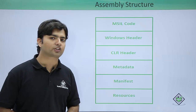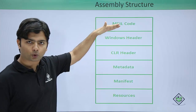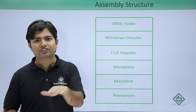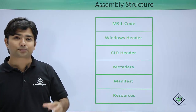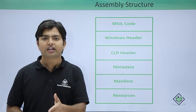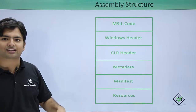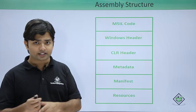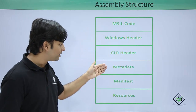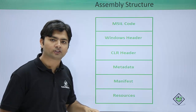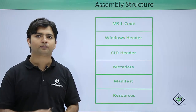Now let's find out the structure of an assembly. Each assembly contains MSIL code. After the first stage of compilation, when your C#, VB, or any language code gets compiled with the specific language compiler, we get the MSIL code. That MSIL code is stored in the assembly in the form of a DLL or EXE. Apart from that, Windows header, CLR header, metadata, assembly manifest, and resources will all be present inside the assembly.